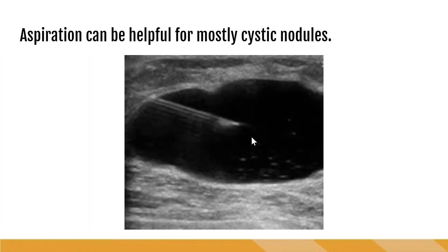FNAs are typically reserved for nodules that are mostly solid, since they carry a higher malignancy risk. However, we can also perform something called an aspiration, which is mostly helpful for cystic nodules, especially nodules that are bothersome to the patient. This is very similar to an FNA — a needle is inserted into the nodule, and we use the ultrasound to watch as that fluid is pulled out of the cyst by a syringe. That fluid can be evaluated for malignancy, but oftentimes cystic nodules are benign. Unfortunately, aspirations are not permanent — quite often the fluid will start to build up again over time, so aspirations usually aren't offered unless the cyst is rather large and particularly troublesome for the patient.